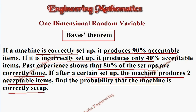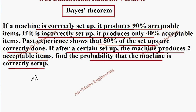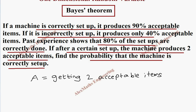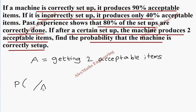So they have given: after a certain setup, the machine produces 2 acceptable items. Let's take this as A — A represents getting 2 acceptable items. So what we know, we have to write in the denominator, and what we have to find, we have to write in the numerator. The machine is correctly set up — let's represent that by C. So what we have to find is P of C given A.